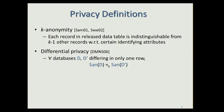The current standard privacy definition is differential privacy, as described in yesterday's tutorial. Roughly speaking, it requires that when one person's data is added or removed from the database, the output distribution of the mechanism changes by at most an epsilon amount. More precisely, for every pair of databases D and D prime differing in only one row, the output distribution of SAN on D is epsilon-close to the output distribution of SAN on D prime, where epsilon-close means the two distributions differ point-wise by a multiplicative factor of e to the epsilon.